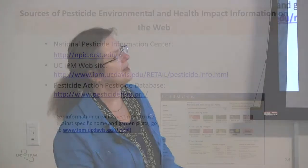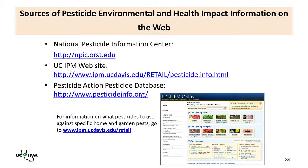Resources for pesticide information include the National Pesticide Information Center, which has fact sheets on home use products and active ingredients that you can print out or link to. The UC IPM website also has extensive information. This presentation is available on the website as well.